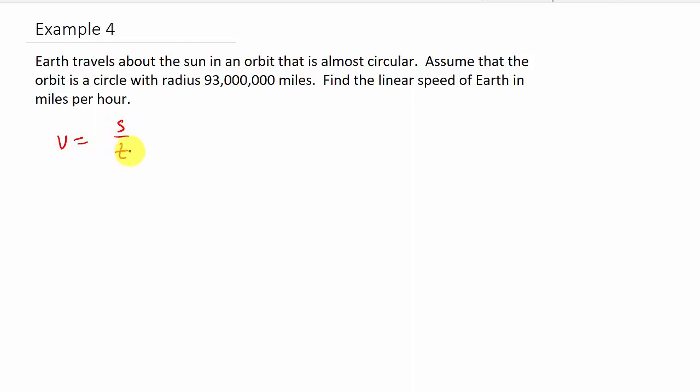So linear velocity is S over T. And we know that S is theta times R, and theta is in radians. So well, let's just go ahead and get the easy one out. The radius is going to be 93 million, and that's in miles. Alright. So now we need to get theta. So let's see. We've got the sun here. Let me do that in a different color. So we've got the sun here, and we've got Earth out here. And it's traveling around the sun in a circle.